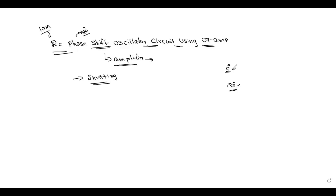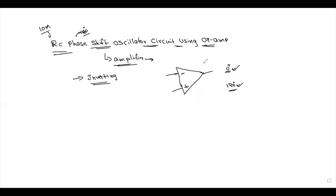In a Wien Bridge oscillator, the phase shift is 0 degrees. The op-amp uses non-inverting terminals, so the output and input are in phase — the phase shift is the same. Therefore, the Wien Bridge oscillator has a 0 degree phase shift.